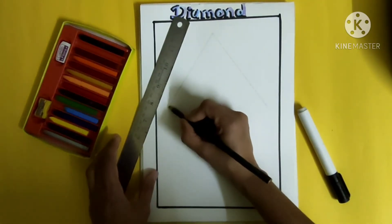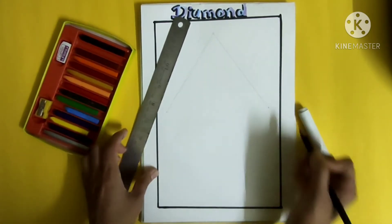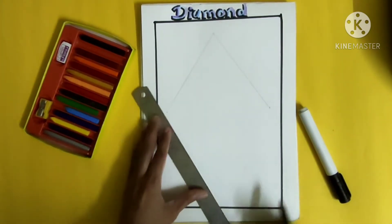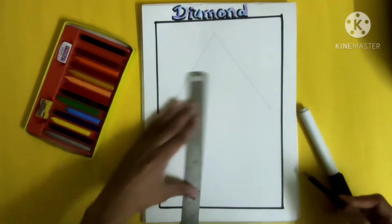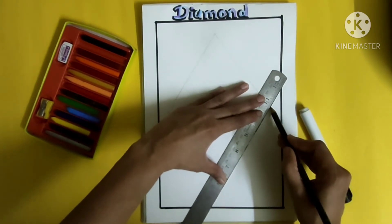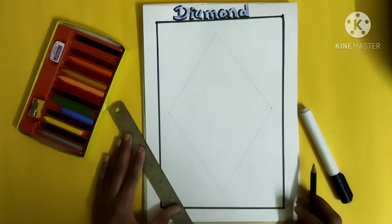So draw two sides like a triangle and then join another one triangle to it, and our diamond shape is ready.